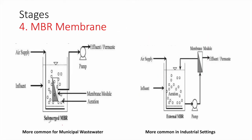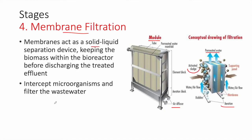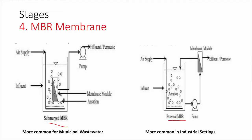MBR modules can be submerged or external. The submerged modules are placed within the wastewater — just imagine this module placed within a tank with air diffusing and water being cleaned through these modules. This is more common for municipal wastewater, such as domestic sewage. External MBRs are usually tubular — we have tubes filled with MBR sheets or filters that are outside the aeration tank — and these are more common in industrial settings.